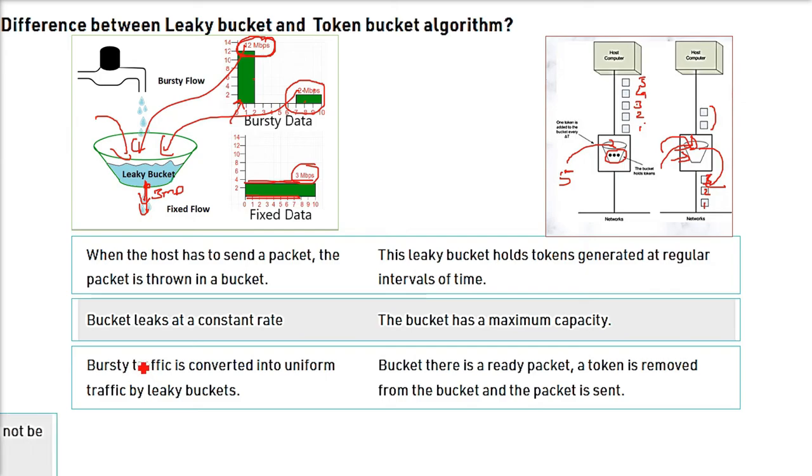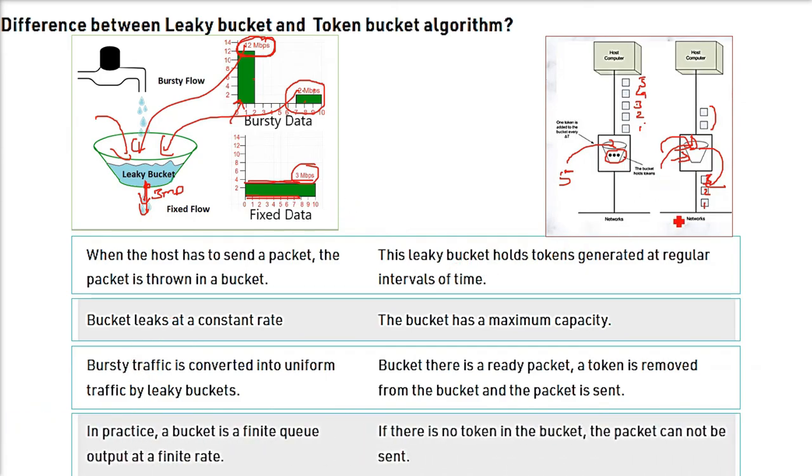Whichever is the latest will hold the token and will come out. So what happens in practice, the bucket is just a queue - a finite queue output at a finite rate. So, first in, first out. Last in, first out.